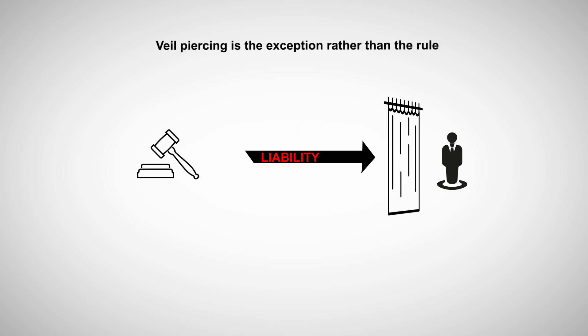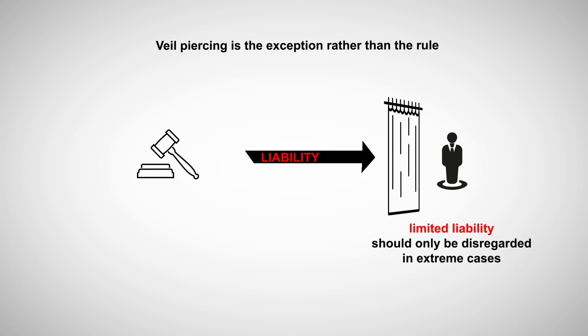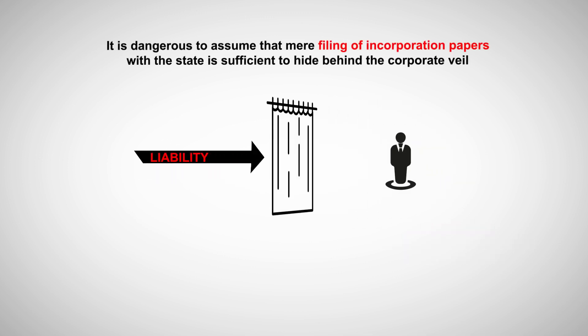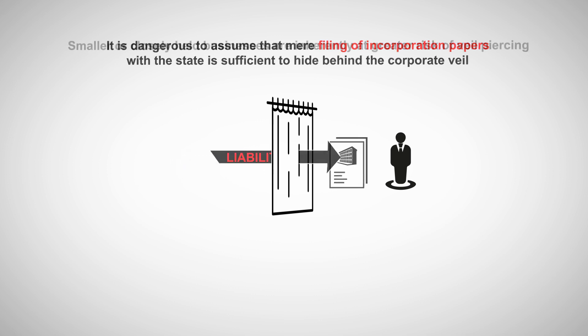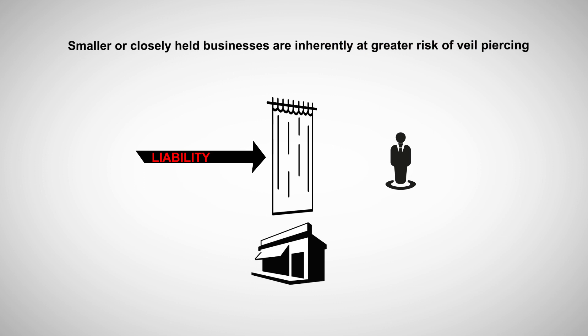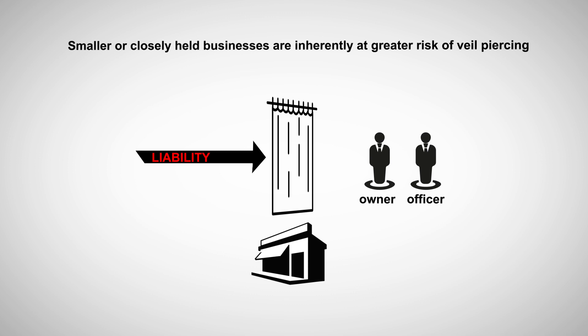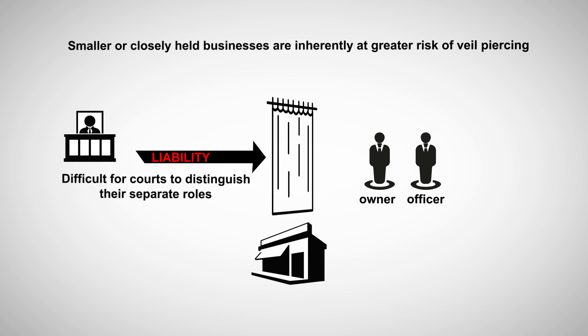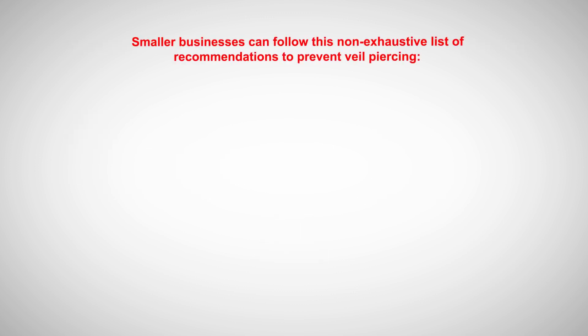Courts typically note that veil-piercing is the exception rather than the rule, and that limited liability should only be disregarded in extreme cases. Nonetheless, it is dangerous to assume that mere filing of incorporation papers with the state is sufficient to hide behind the corporate veil. Smaller or closely held businesses are inherently at greater risk of veil-piercing, because the same people are often owners and officers, which makes it particularly difficult for courts to distinguish their separate roles. Consequently, smaller businesses can follow this non-exhaustive list of recommendations to prevent veil-piercing.